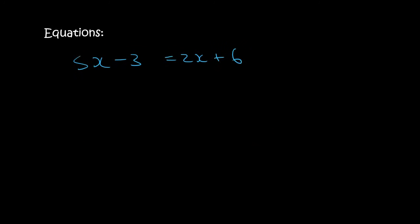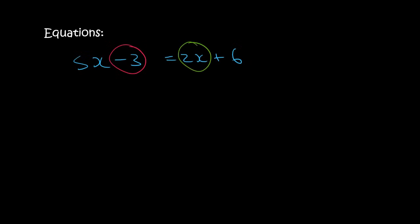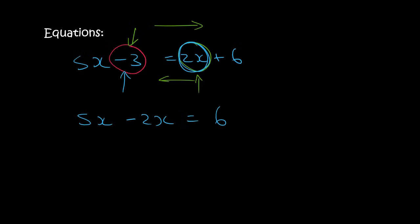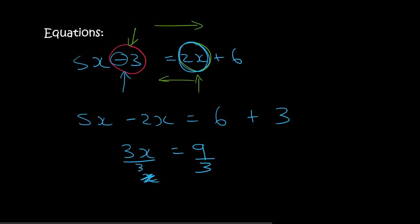Here's another one. All x's go to the left, all numbers go to the right. This 2x needs to move to the left, becoming minus 2x. This minus 3 needs to move to the right, becoming plus 3. So 5x minus 2x is 3x, and 6 plus 3 is 9. Dividing both sides by 3 — so I can cross that out and be left with just x — x equals 9 divided by 3, which is 3.